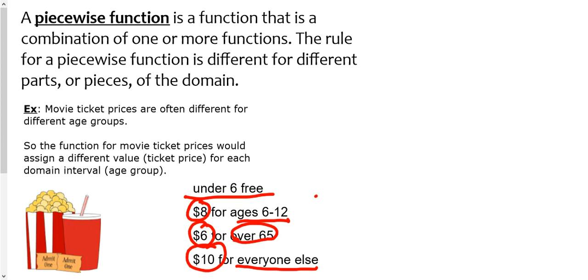We want to write a function that conveys that. But there's no simple one function because it's different for different ages. So we're going to write a piecewise function. We're going to define that function like this: f of x is equal to, and then we're going to use a giant curly bracket.